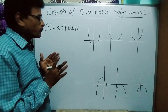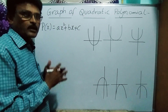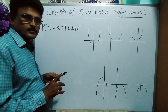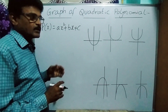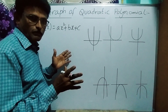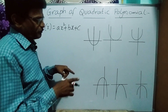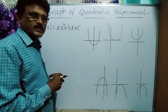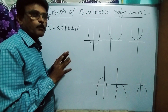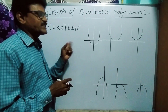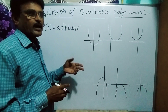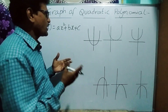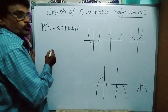First of all, we have to know the shape of a quadratic polynomial. For linear polynomials we get straight lines; similarly, for quadratic polynomials the shape will be a parabola — a U-shape. When we plot ax² + bx + c on a graph, we get a parabola. This parabola can cut the x-axis at two places, at one place, or sometimes it won't touch the x-axis at all.